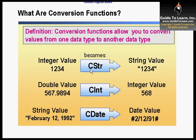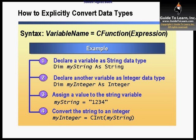So in this scenario, if you use CString, you're converting an integer into a string value. You could convert a double into an integer, or convert a string value into a date value. There are specific conversion utilities like C-whatever-the-function-is — CInt, CSTR, and so forth — that automatically convert.